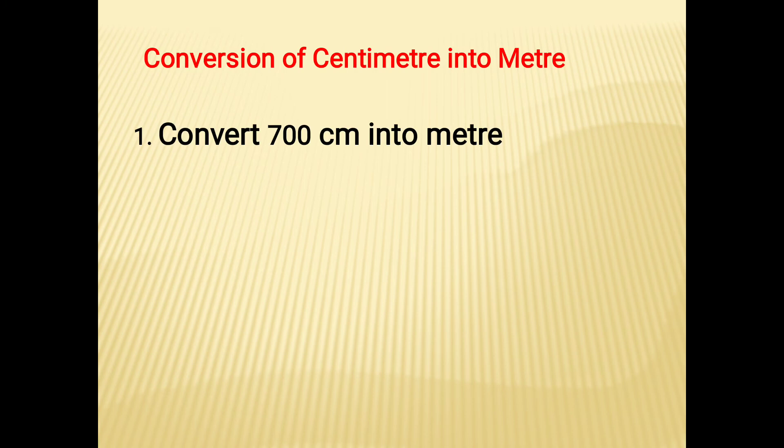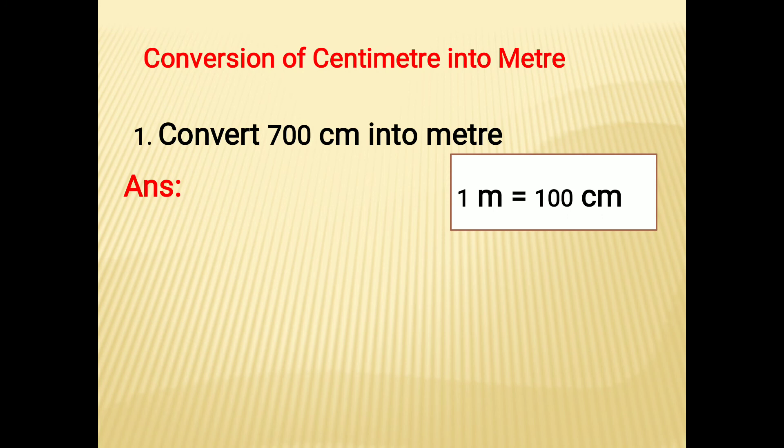Now, conversion of centimeter into meter. The first sum: convert 700 centimeters into meters. The first step — 1 meter is equal to 100 centimeters. Therefore, 700 centimeters — I am going to divide by 100.